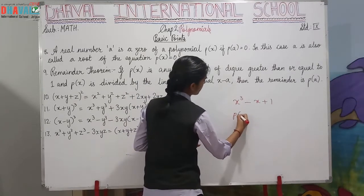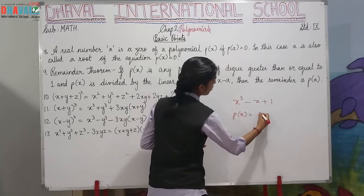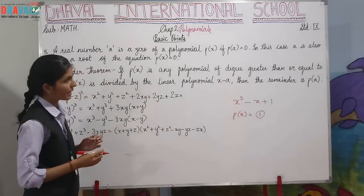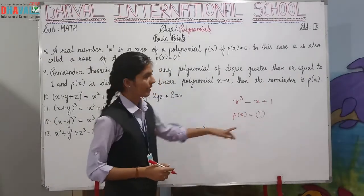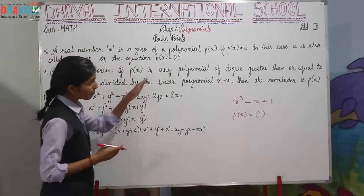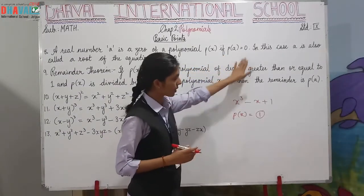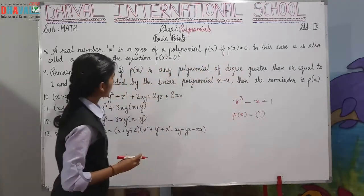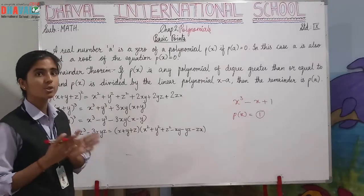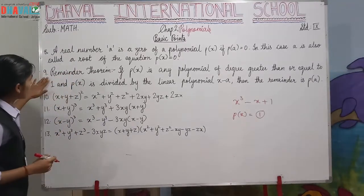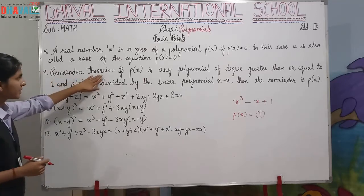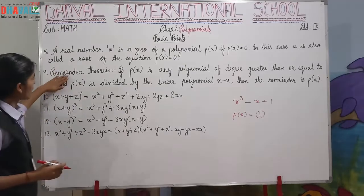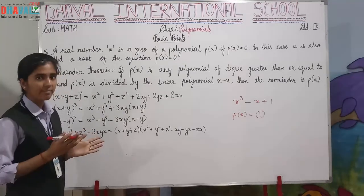For example, if we put any value in the place of x, say the value is 1, when we put 1 in P(x), if P(1) equals to 0, then the root is 1. If we do not have zero, then it will not be a root.